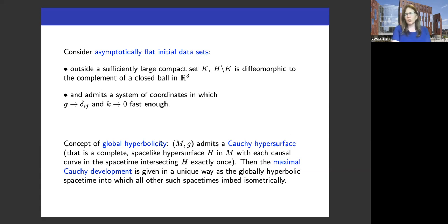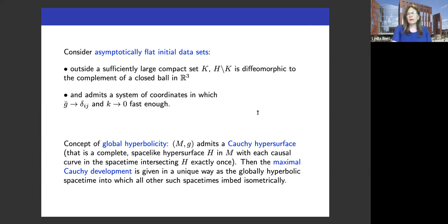Just a word about global hyperbolicity. For physical questions, you don't want time loops or anything like that to occur. A Lorentzian spacetime Mg will admit a Cauchy hypersurface — that's basically a complete spacelike hypersurface H in M where each causal curve in the spacetime intersects H exactly once: not zero, not twice, just once. That's what we call global hyperbolicity, and the maximal Cauchy development is then given in a unique way.